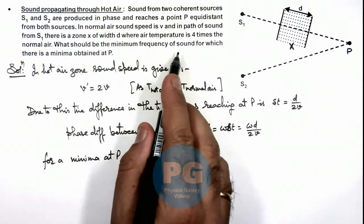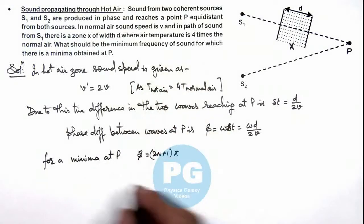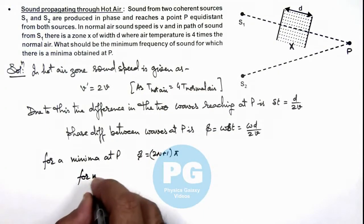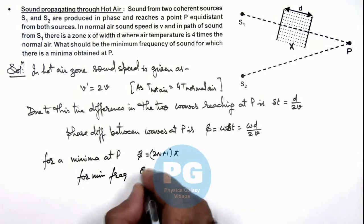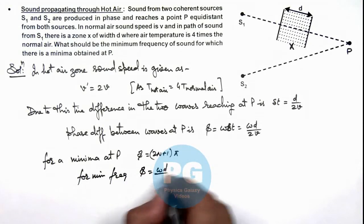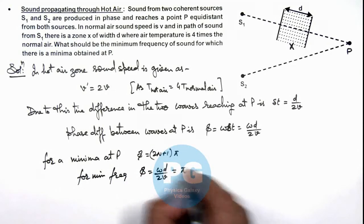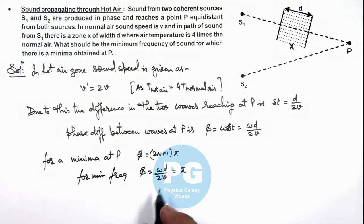For the minimum frequency, we use φ which is ω d by 2v should be equal to π. So in this situation, ω we can also write as 2πν, multiplied by d by 2v is equal to π.